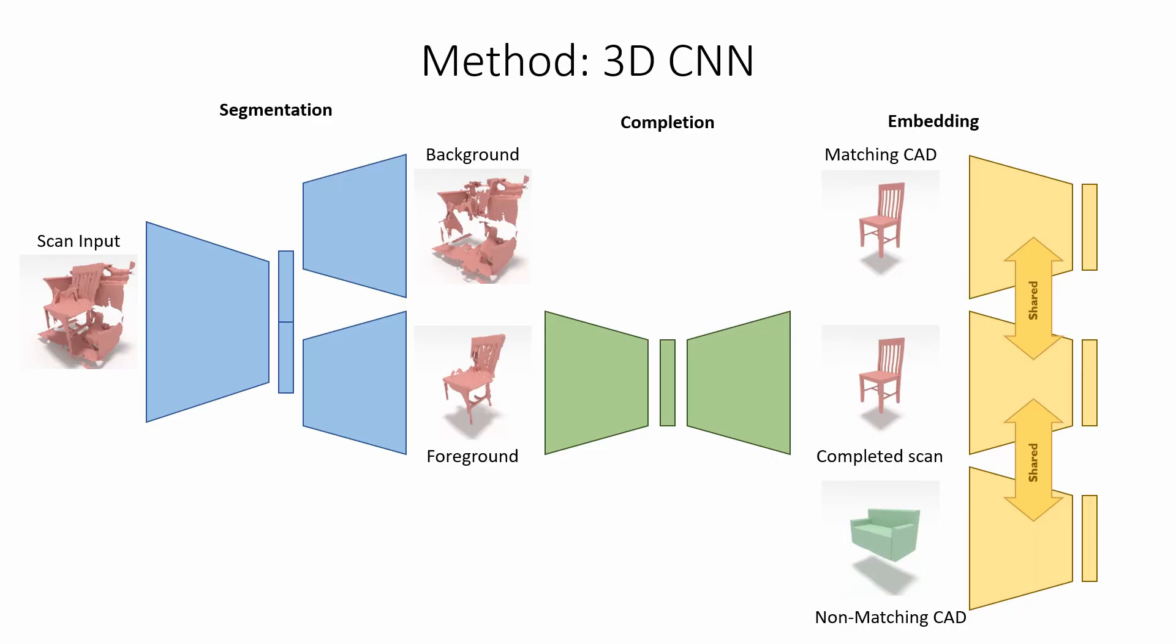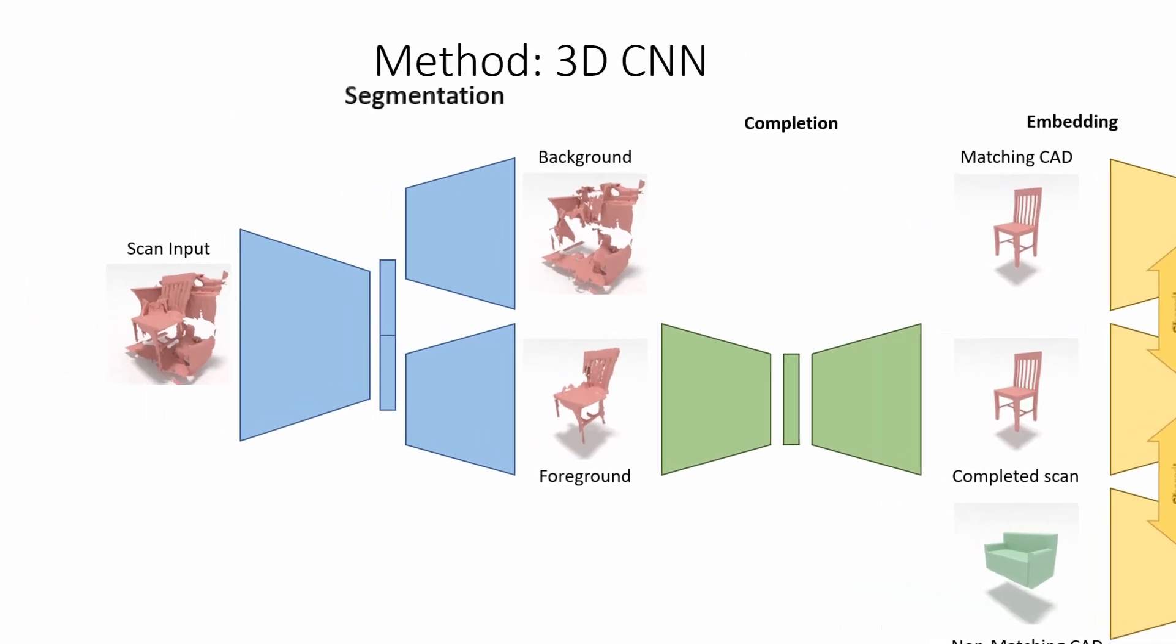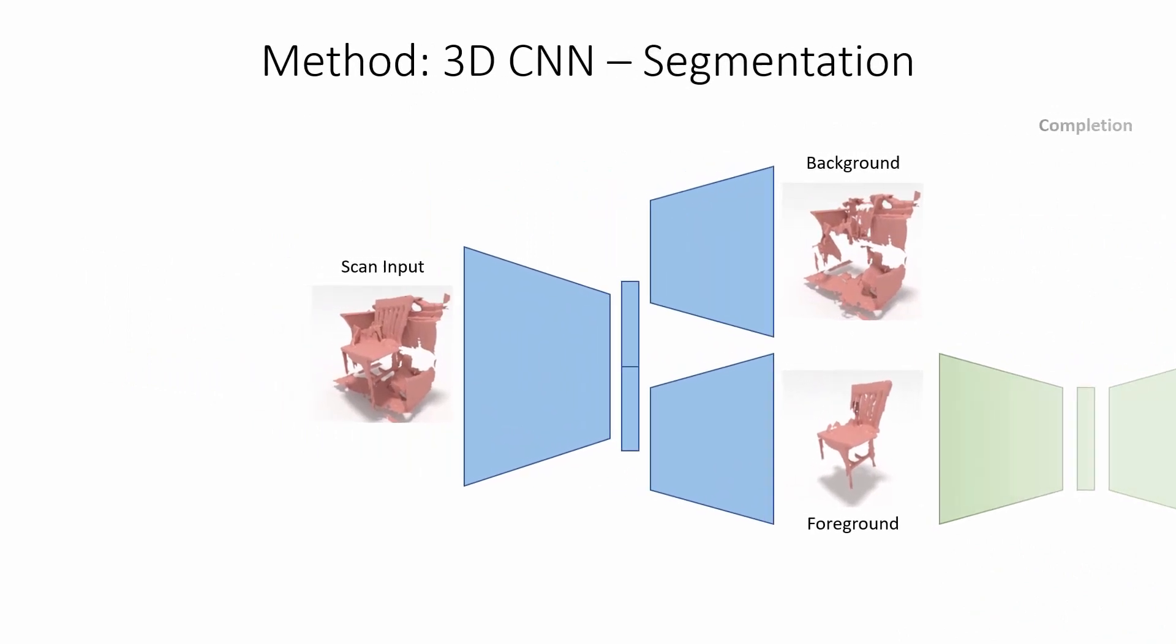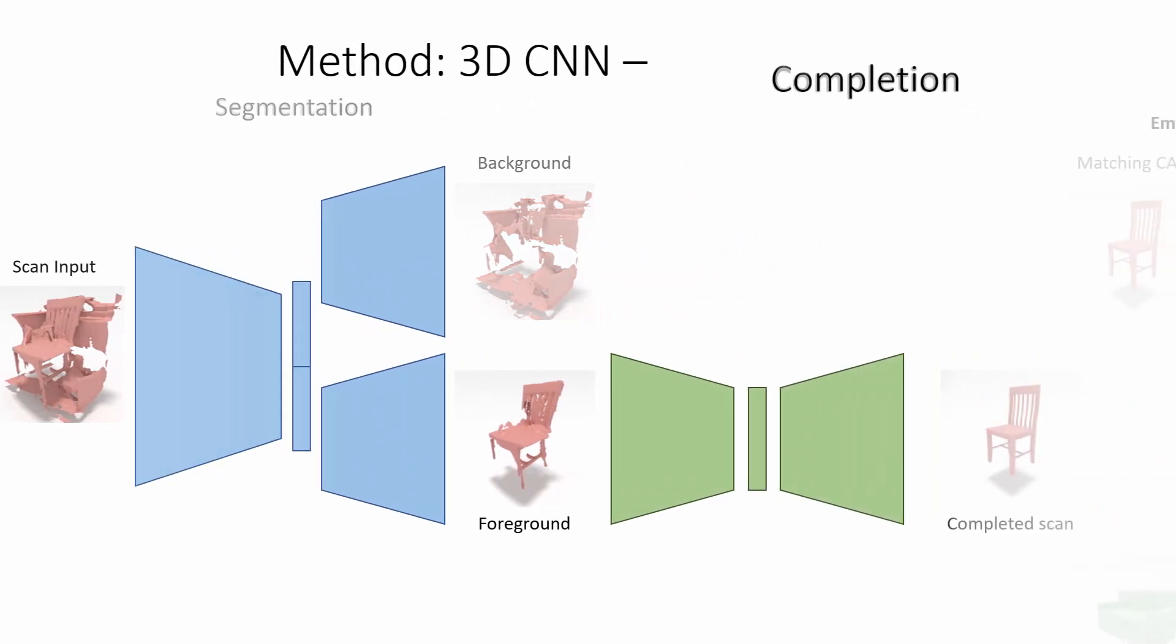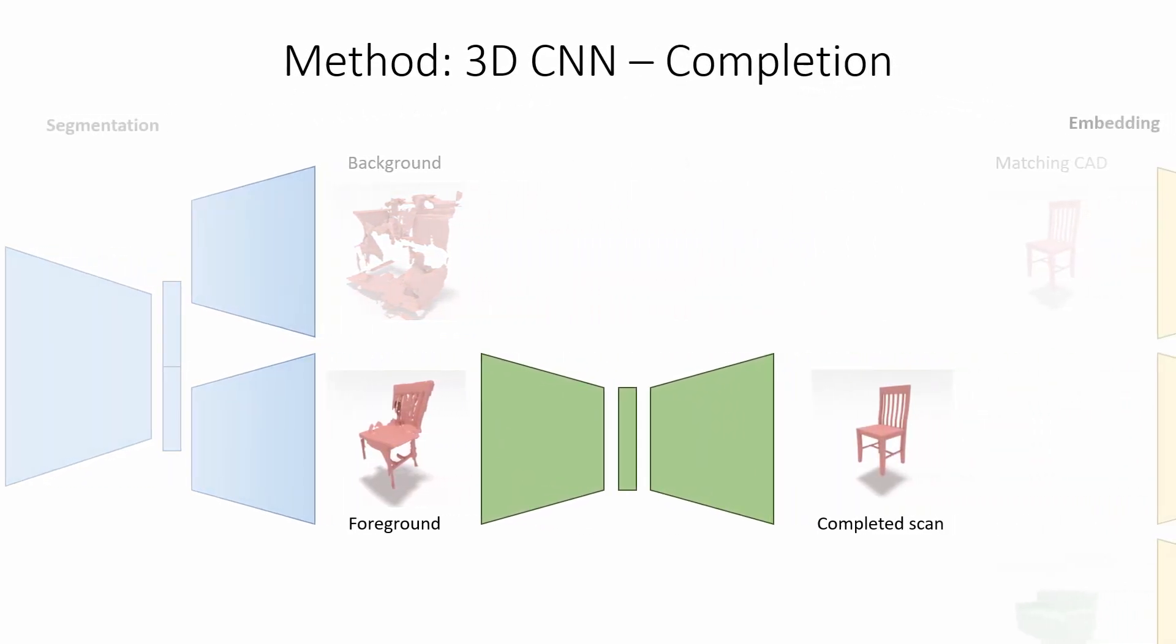To this end, we propose a novel 3D CNN-based approach designed as a stacked hourglass. The first hourglass takes as input the region surrounding a scan object as a binary occupancy grid. It is composed of an encoder which leads to decoders, which segment the object geometry from background clutter. The second hourglass encodes the segmented but partial geometry and learns to complete it.